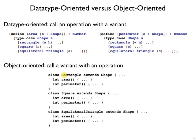For example, rectangle variant of shape is responsible for implementing area and perimeter on rectangles. Whenever we want to call area on a shape, we take the object and we send it the area method.